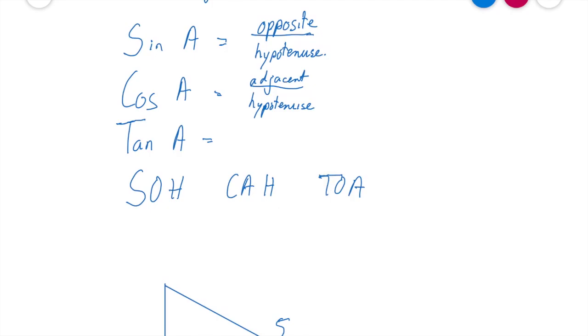And last but not least, then my tan A. Well, that brings in my TOA. So my T is my tan, my O is my opposite, and my A is my, yeah, you guessed it, adjacent.